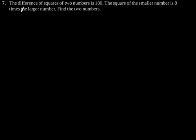Exercise 4.3 Question number 7. The difference of squares of two numbers is 180. The square of the smaller number is 8 times the larger number. Find the two numbers.